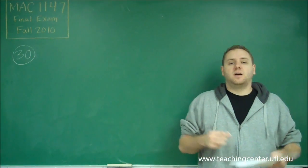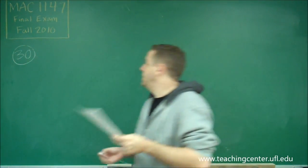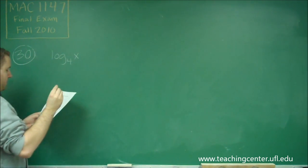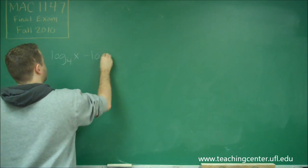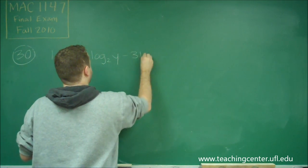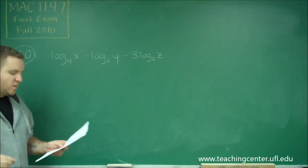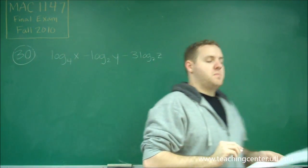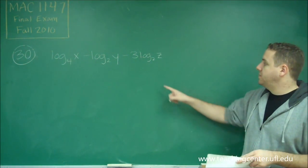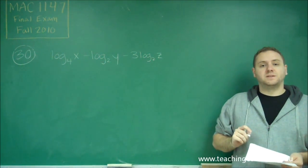For number 30, we have a logarithmic expression that needs to be written as a single logarithm. We have log base 4 of x, minus log base 2 of y, minus 3 log base 2 of z. To combine this into a single logarithm, all of your logs have to have the same base. Right now that doesn't happen, because the y and z terms have base 2, but x has log base 4.